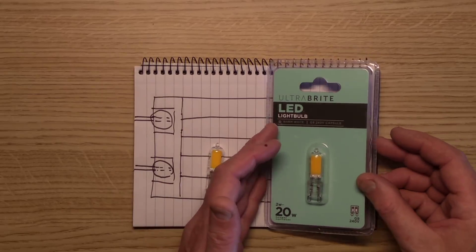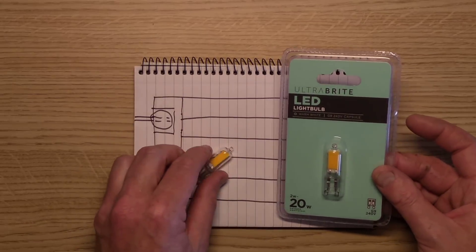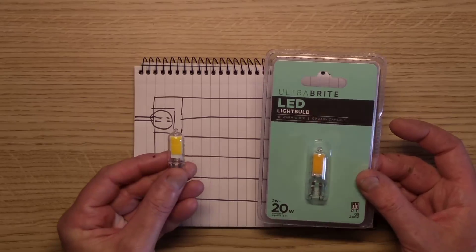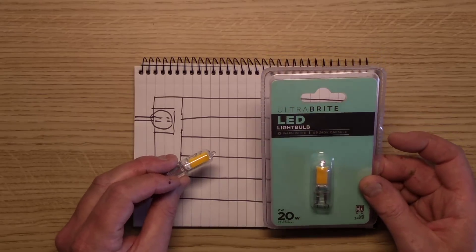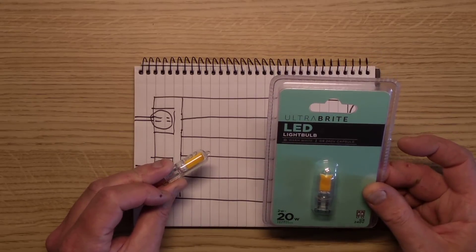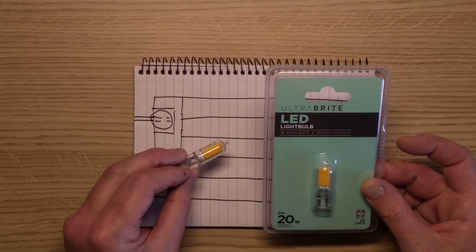While I was here I noticed that Pound World was closing down. There's one fairly local so I thought let's see what they've got. They had these interesting lamps. These are LED GU9 style capsules.